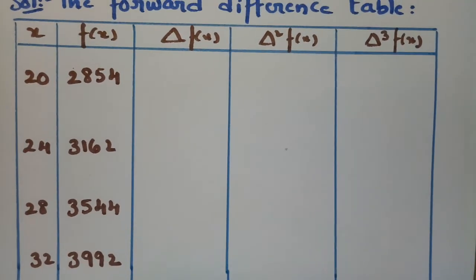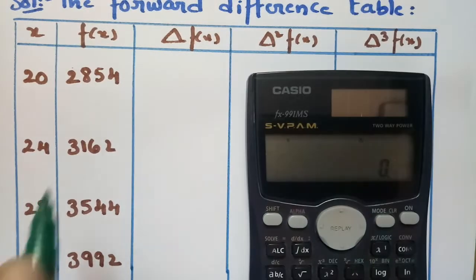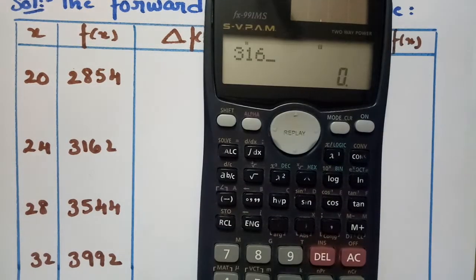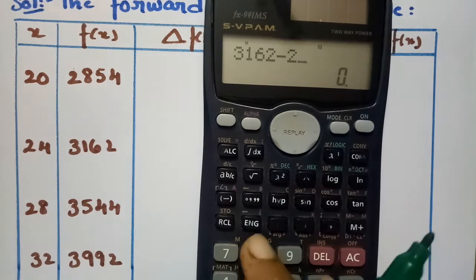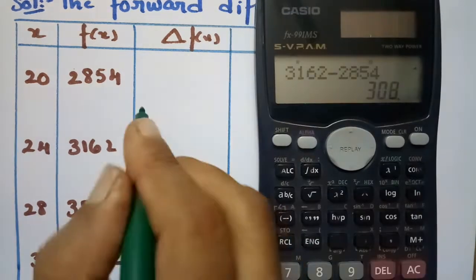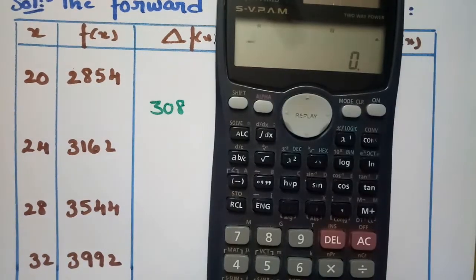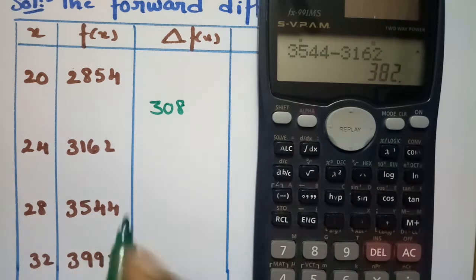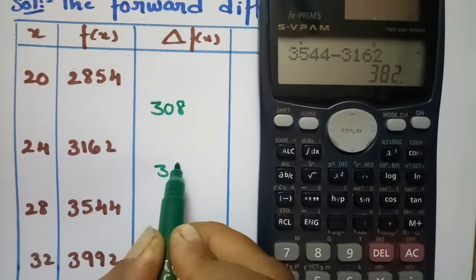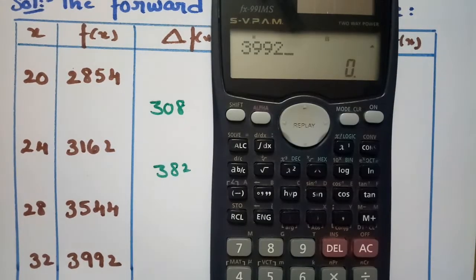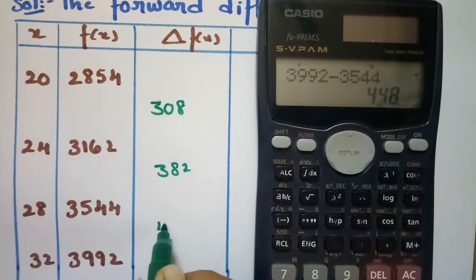Now the first differences: y2 minus y1, so 3162 minus 2854 gives 308. The next one is 3544 minus 3162, which gives 382. The next value is 3992 minus 3544, which gives 448.